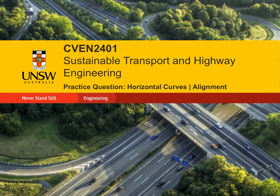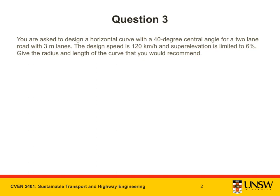This video is a practice question on horizontal curves, or more specifically the alignment of horizontal curves. I'm going to read out the question while underlining key information. You are asked to design a horizontal curve with a 40 degree central angle for a two-lane road with 3 meter lanes. The design speed is 120 kilometers per hour and superelevation is limited to 6%. Give the radius and length of the curve that you would recommend.